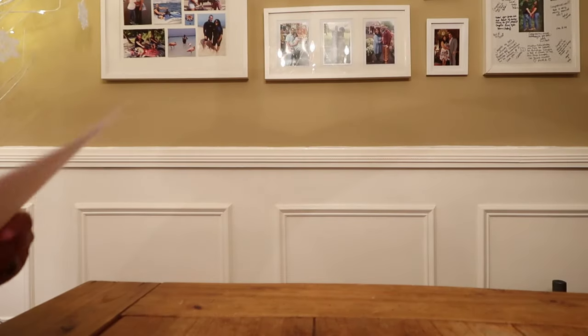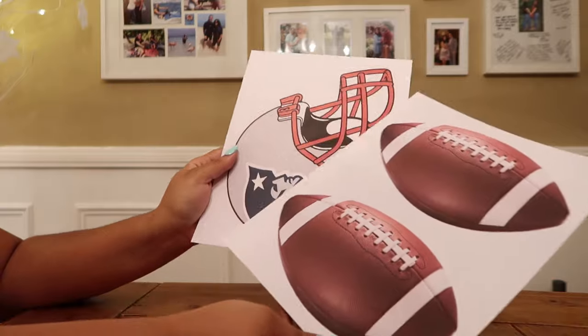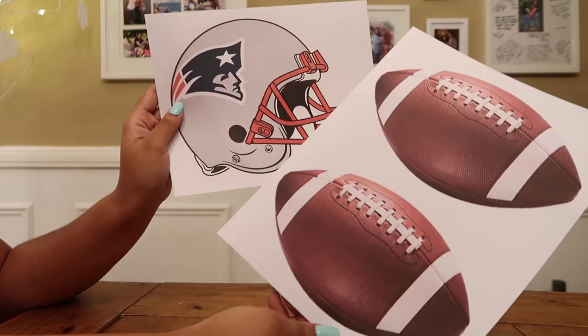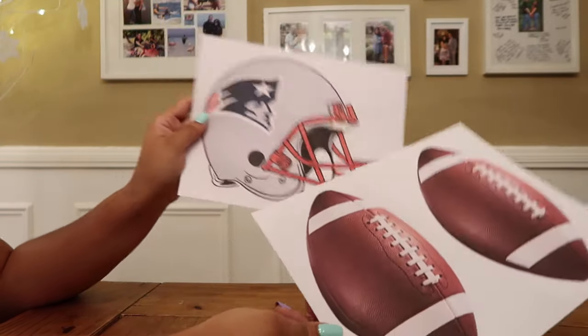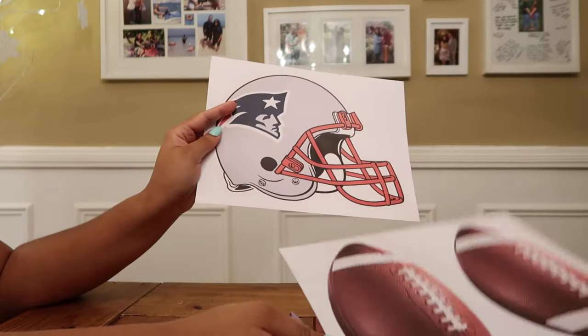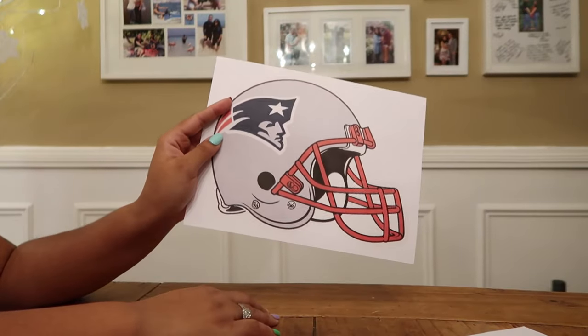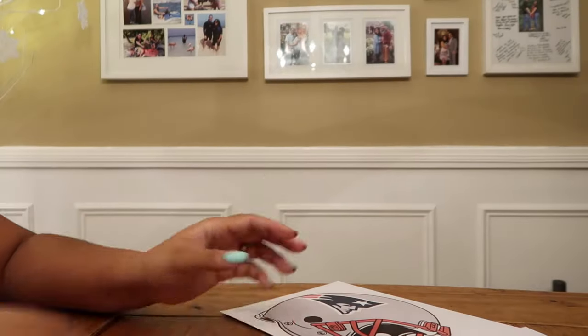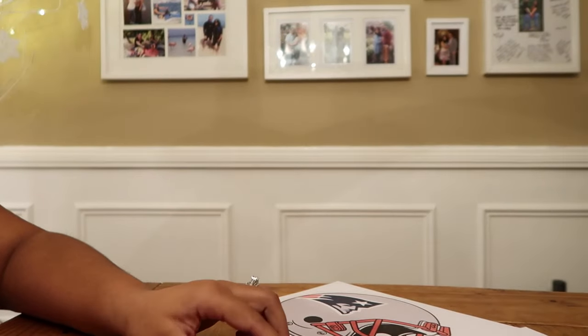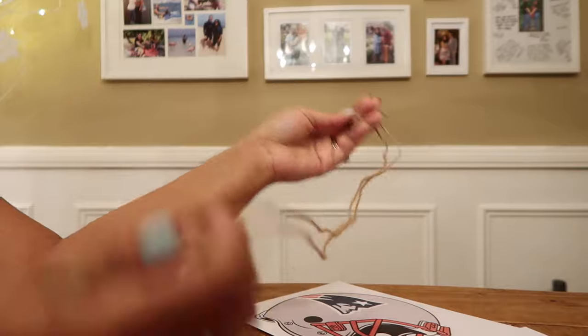For our last DIY we're actually going to be making a small banner for our bar cart. And again we're going to be using these images that are printed. So I printed two footballs and a Patriots football helmet and you're also going to need a hole puncher and string of your choice. I'm going to be using this twine, go ahead and cut these out.